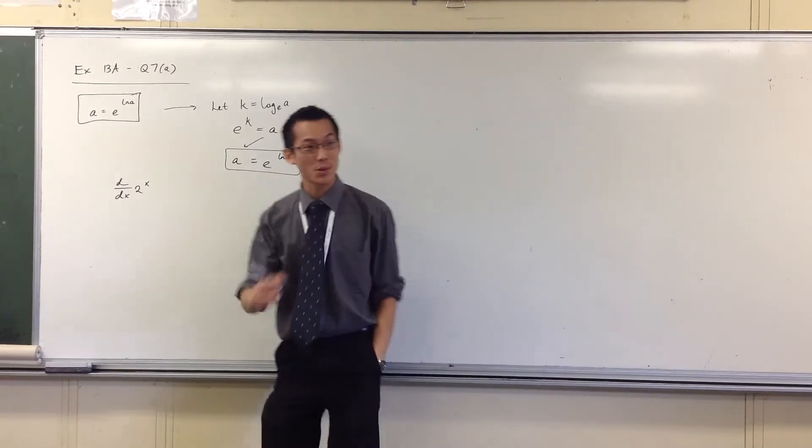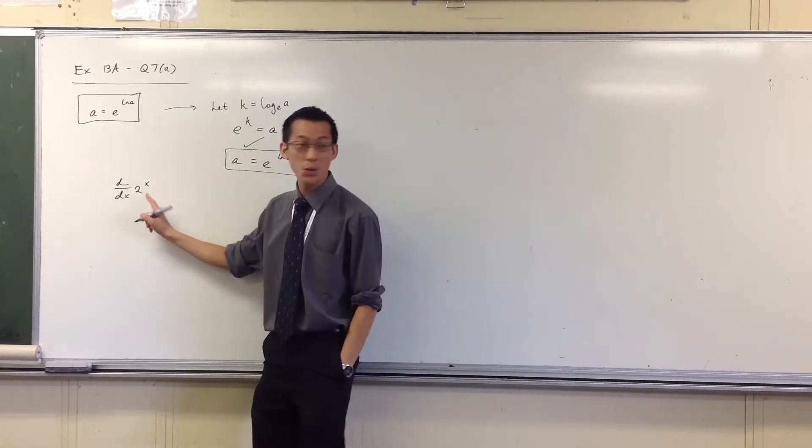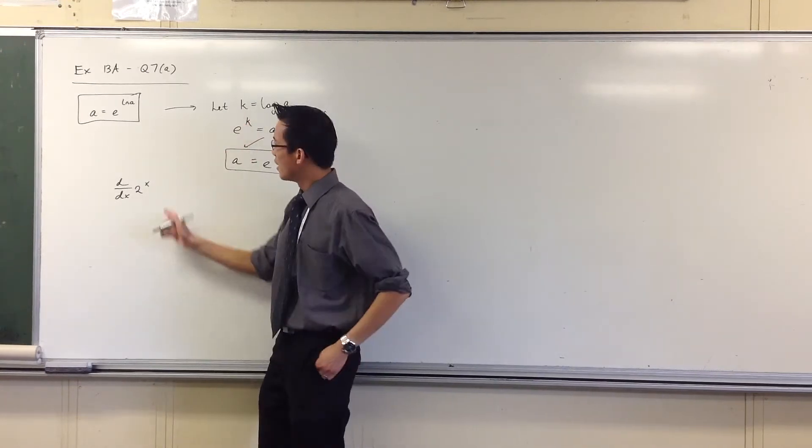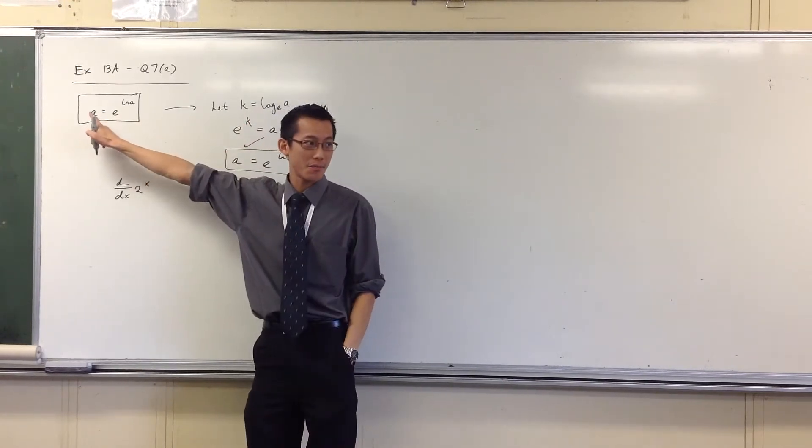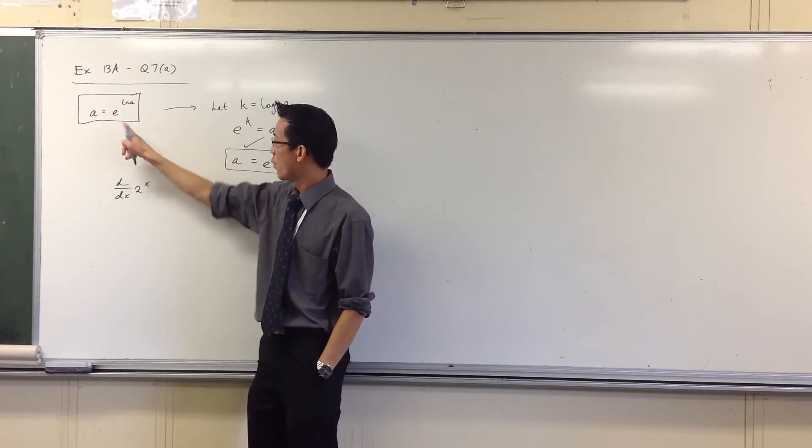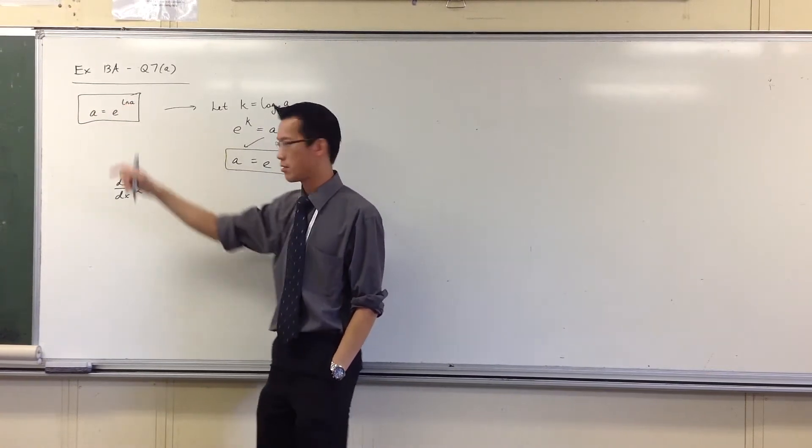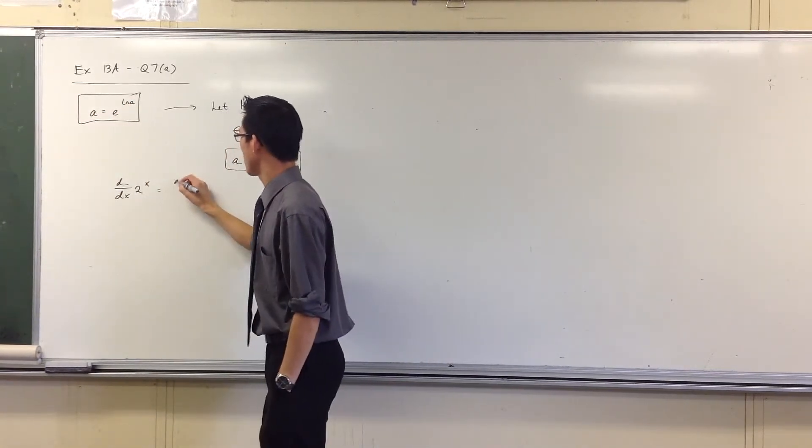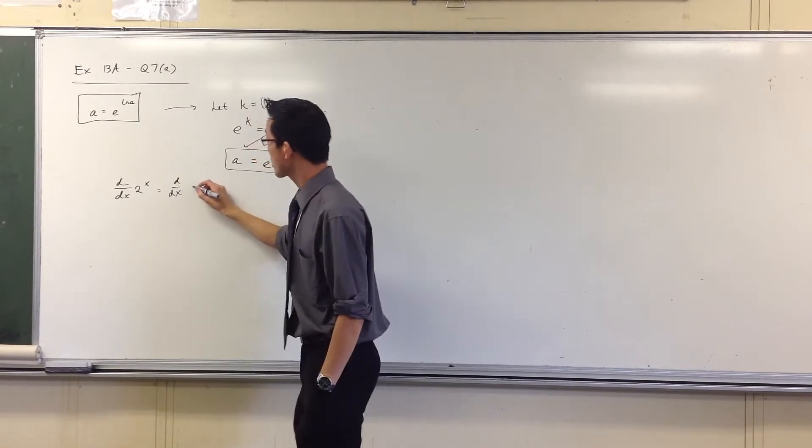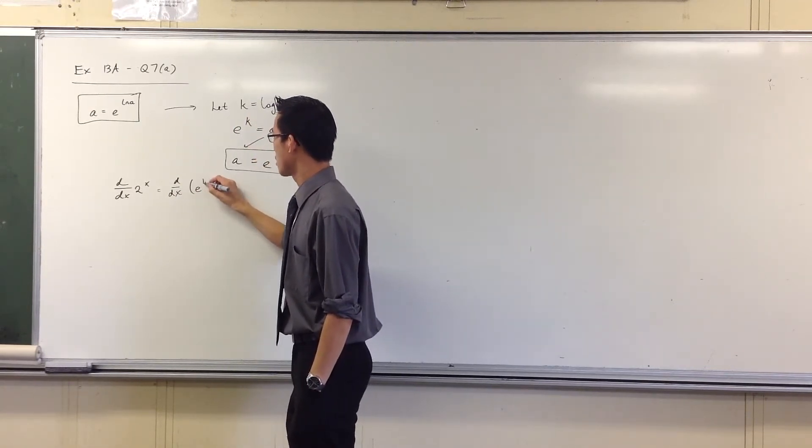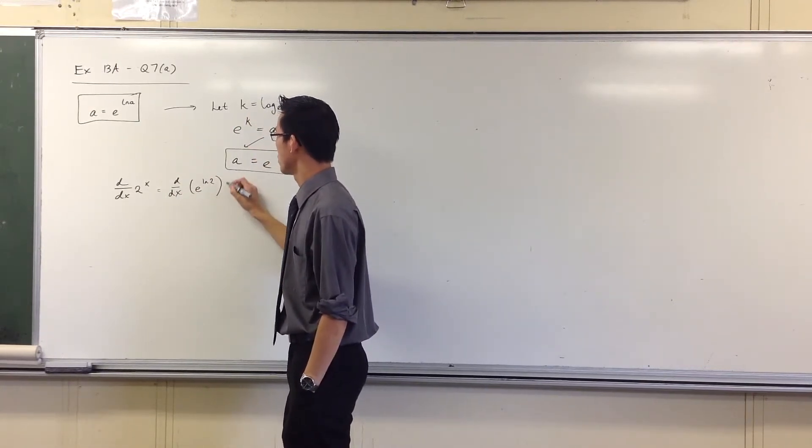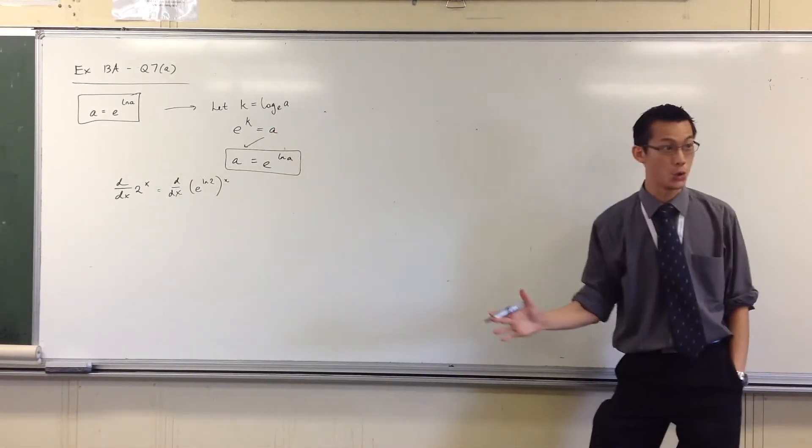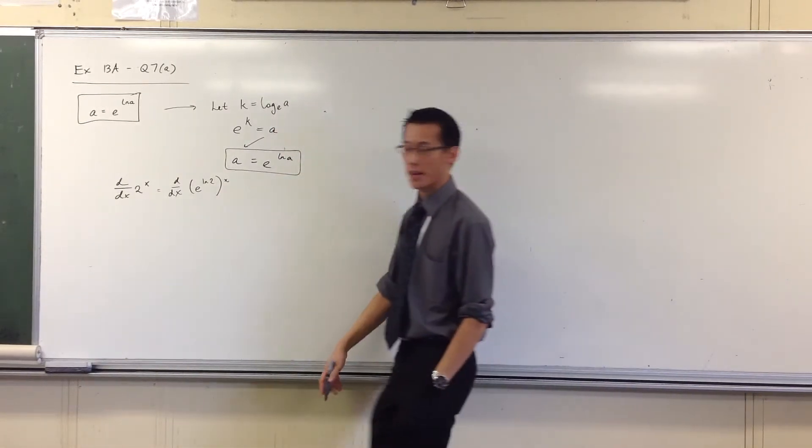Okay, so what I'm going to try and use is this 2, right? That's the problem, as it were. So I'm going to replace that 2 with e to the log 2. So this is going to be the derivative of e to the log 2 to the power of x. That thing in the brackets, that's my 2. So the whole thing's to the power of x.